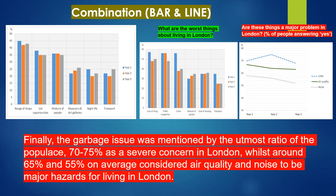Finally, the garbage issue was mentioned by the utmost ratio of the populace, 70 to 75 percent, as a severe concern in London, whilst around 65 percent and 55 percent on average considered air quality and noise to be the main hazards for living in London.